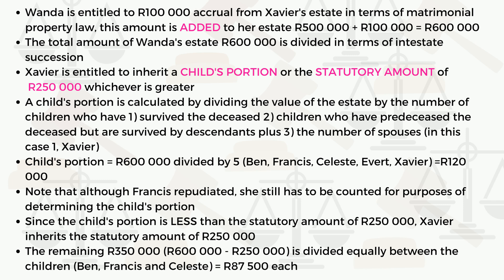It is important to note that although Francis repudiated — meaning she refused to inherit — she still has to be counted for the purposes of calculating the child's portion. Do not make the mistake of excluding Francis from this calculation just because she repudiated the inheritance.